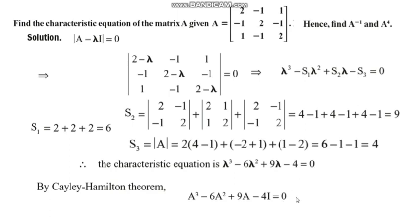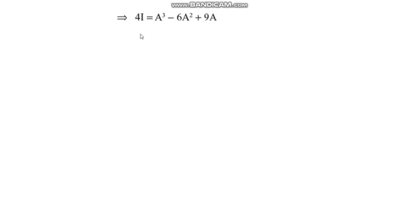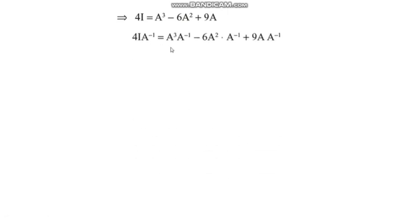To find A inverse, we have the matrix equation: A³ − 6A² + 9A − 4I = 0, which gives 4I = A³ − 6A² + 9A. Multiplying through by A inverse: 4A inverse = A²− 6A + 9I, using the property that A³·A⁻¹ = A², A²·A⁻¹ = A, and A·A⁻¹ = I.